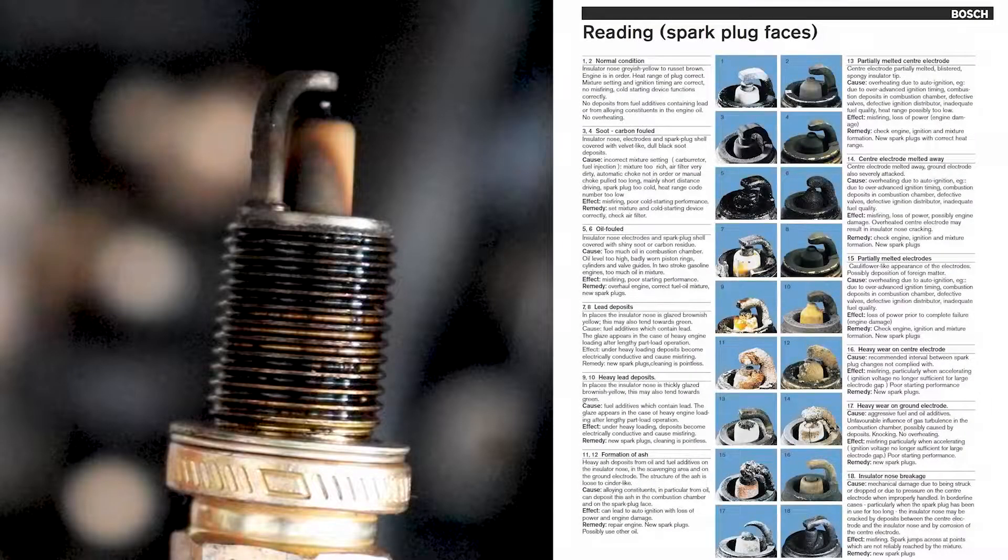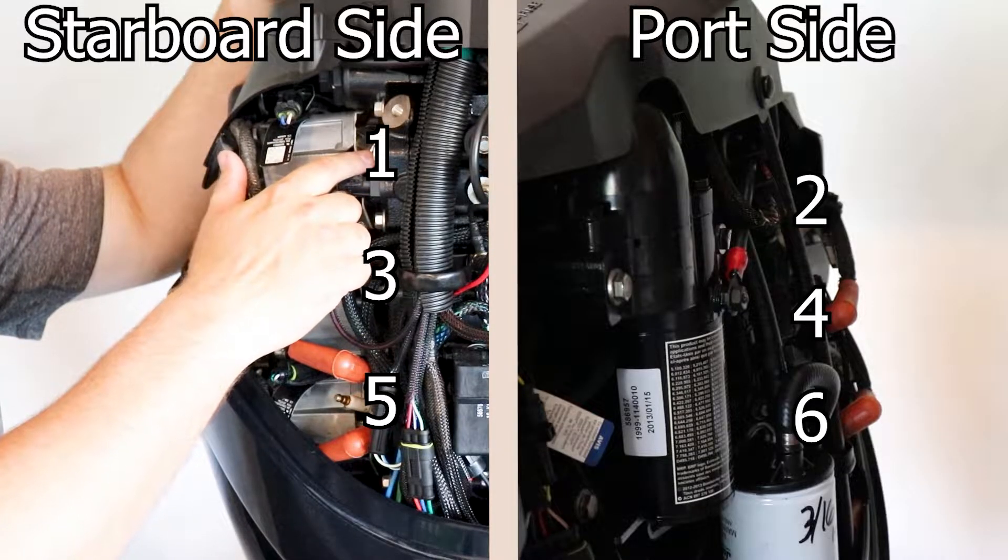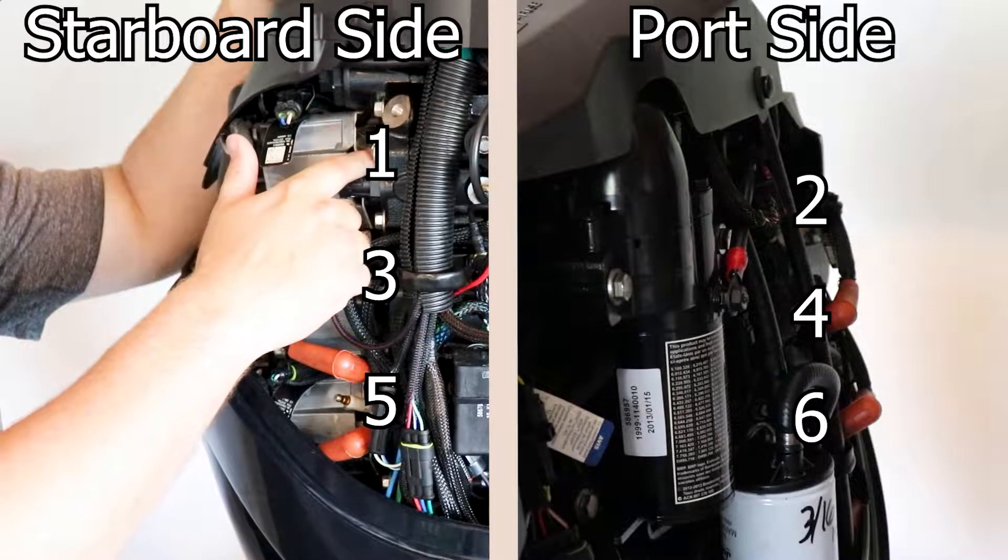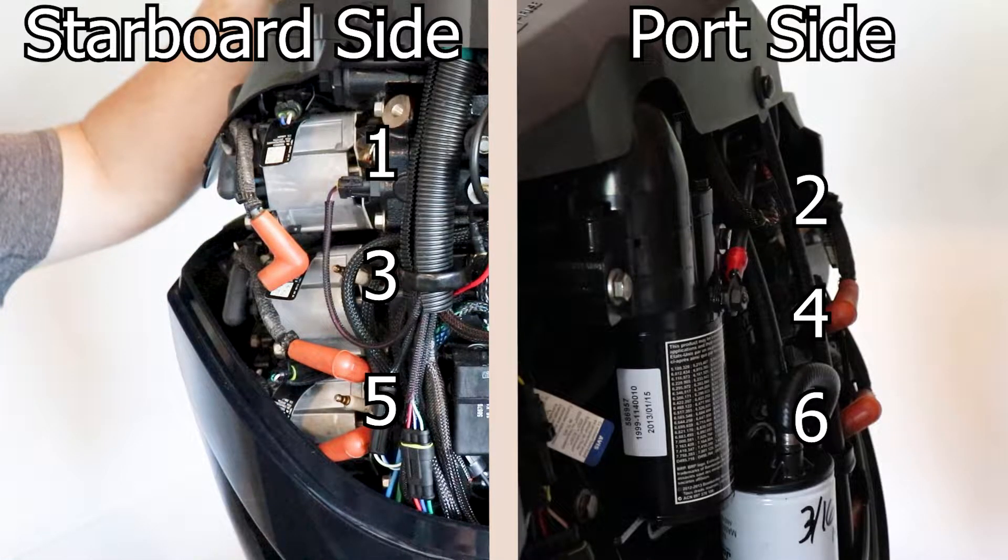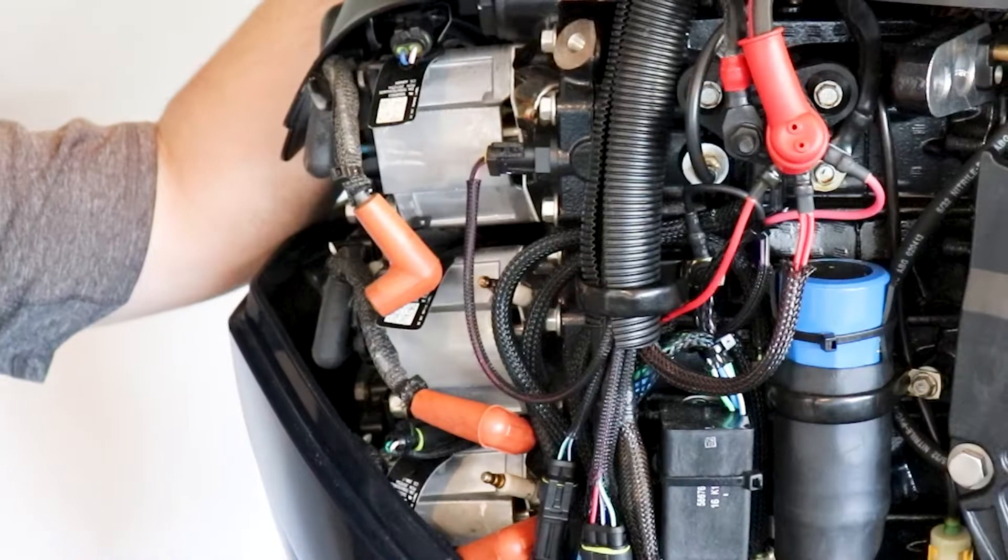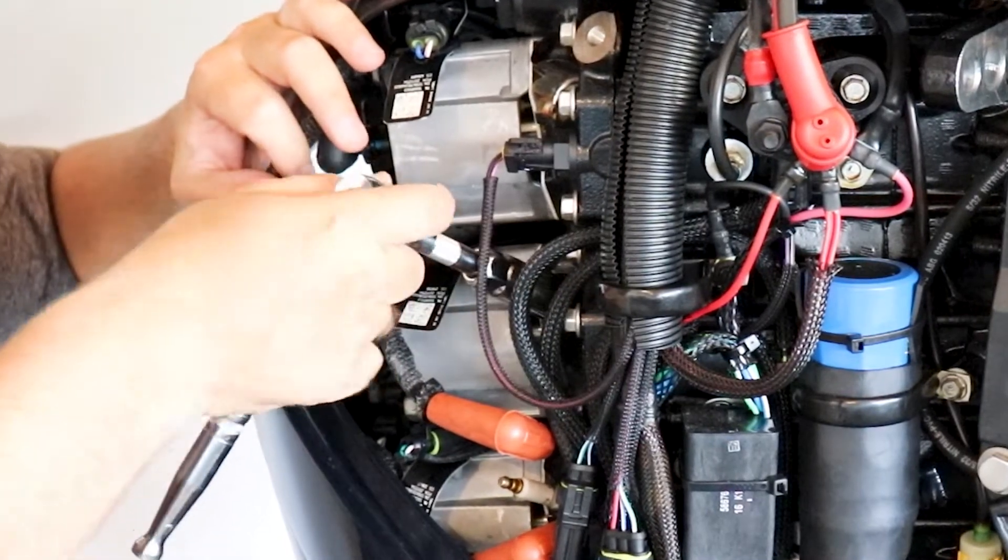And we want to check the condition of the old spark plug. That spark plug came out of cylinder number one. Our E-Tec 150 is a six cylinder engine, so we have cylinder one, three, and five on the starboard side, and two, four, and six on the port side. Now we're going to remove the spark plug from cylinder number three.